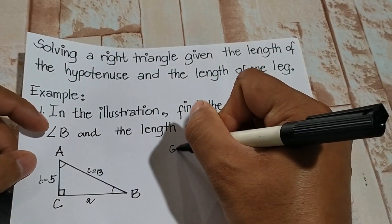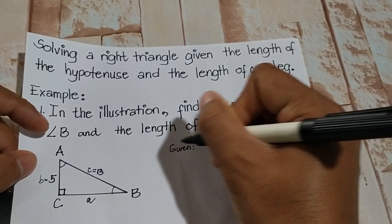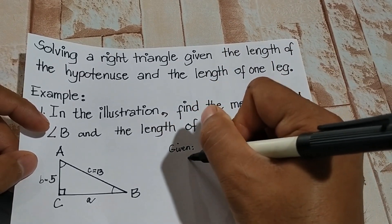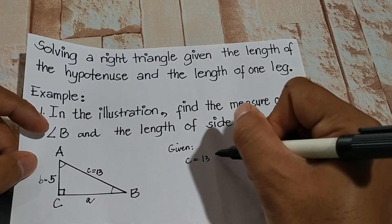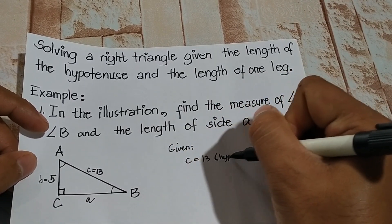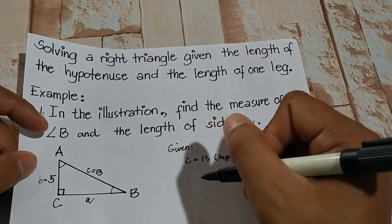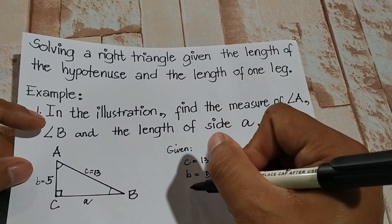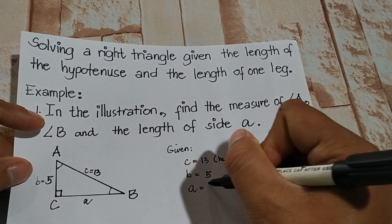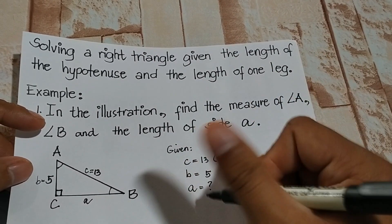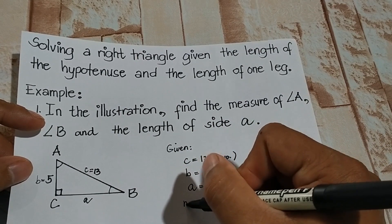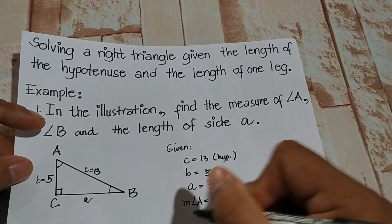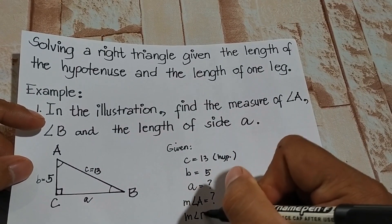Let's write down what is given. We have side C equal to 13, which is our hypotenuse, and side B is equal to 5. So side A is unknown, and we are also looking for the measure of angle A and the measure of angle B.